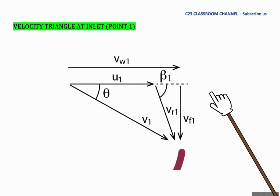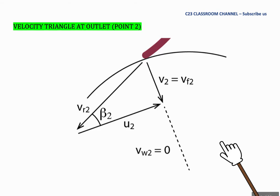So this is the velocity triangle at the inlet. We also name the inlet here as point 1. This is the velocity triangle at the outlet or velocity triangle at point 2.